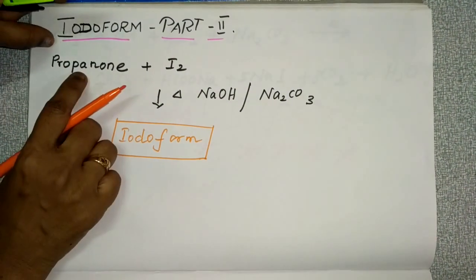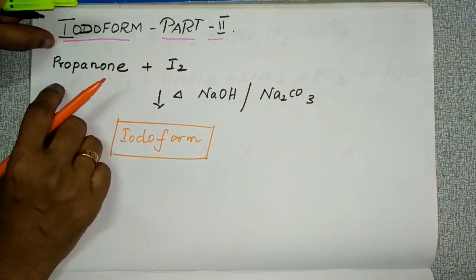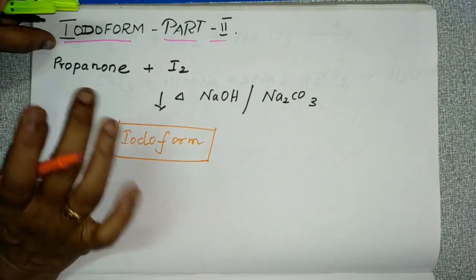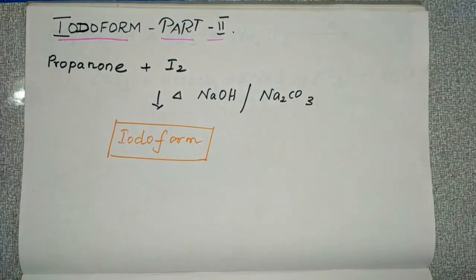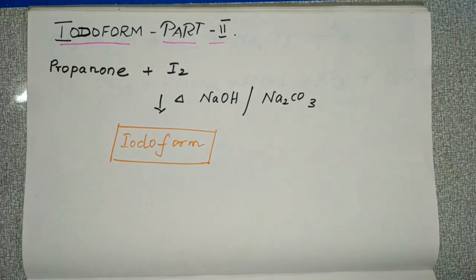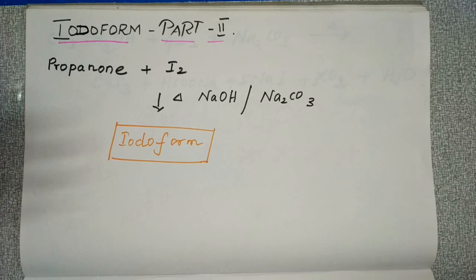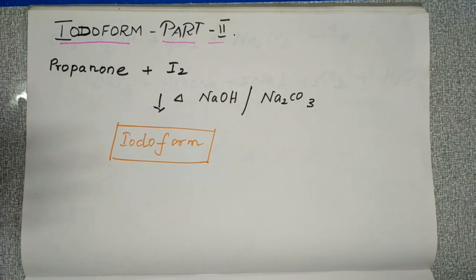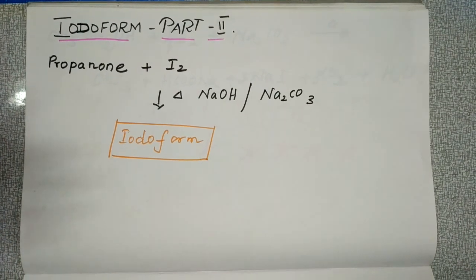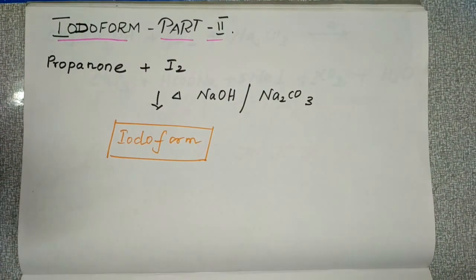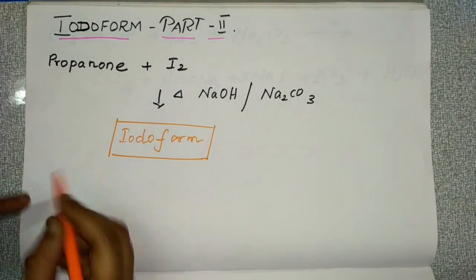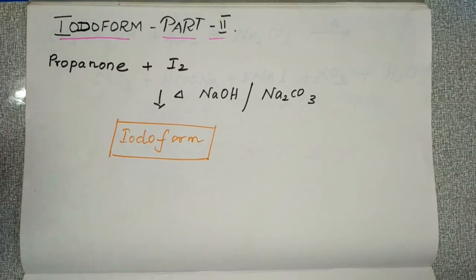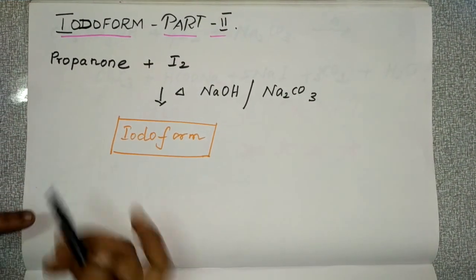Here, instead of ethanol, we are taking propanone. The preparation of iodoform from propanone involves two steps. I will write the reaction stepwise — Step 1.